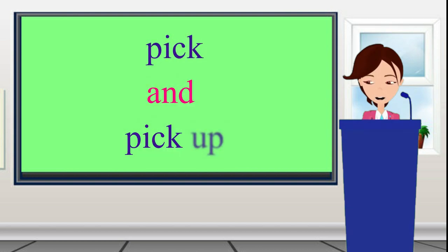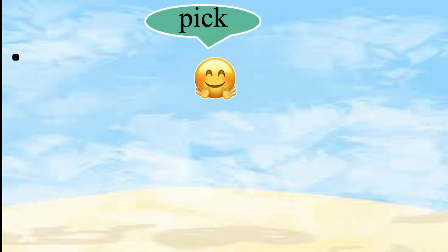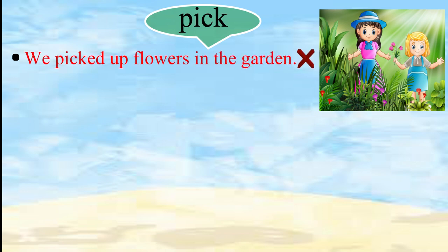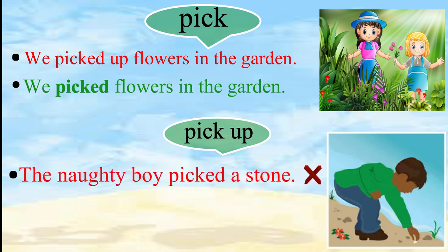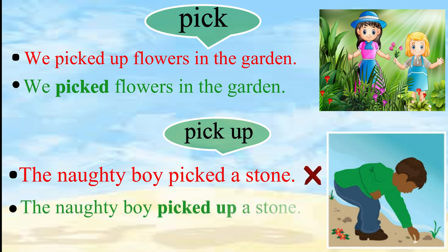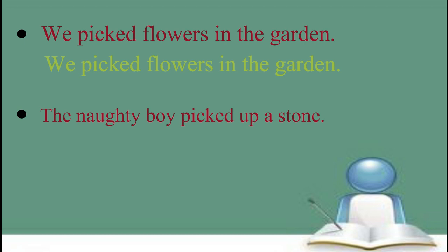Pick and pick up. To pick fruits or flowers means to pull them away with the fingers. To pick up means to lift up from the ground. Don't say 'We picked up flowers in the garden' — say 'We picked flowers in the garden.' Also, don't say 'The naughty boy picked a stone' — say 'The naughty boy picked up a stone.' Repeat: 'We picked flowers in the garden.' 'The naughty boy picked up a stone.'